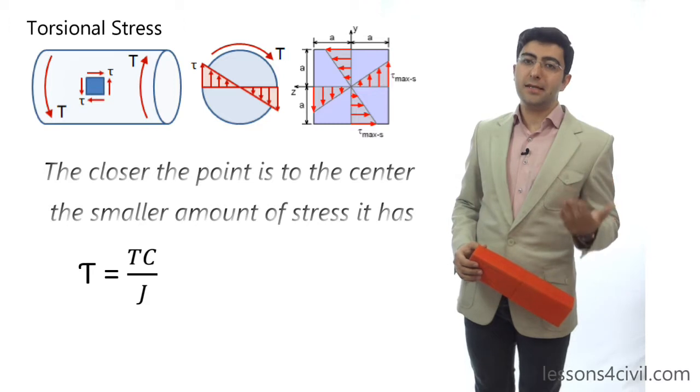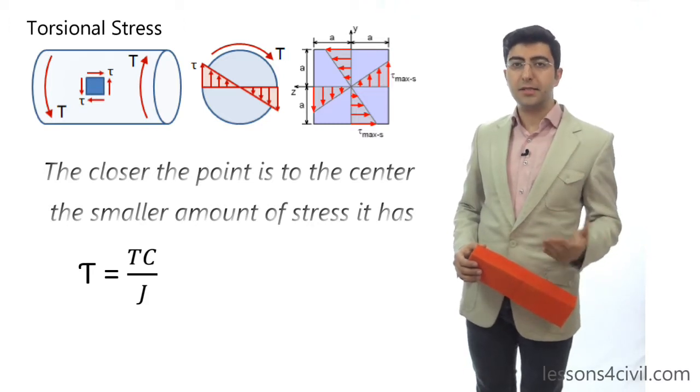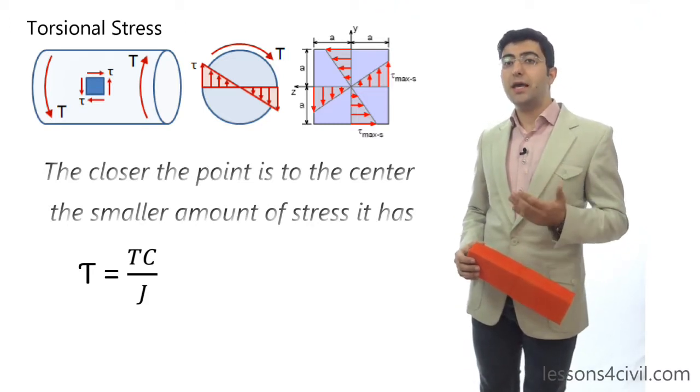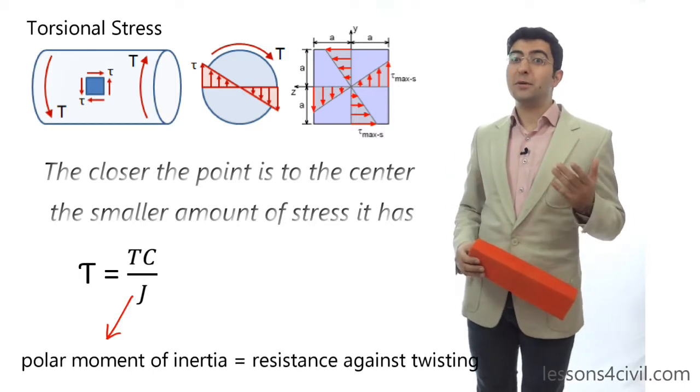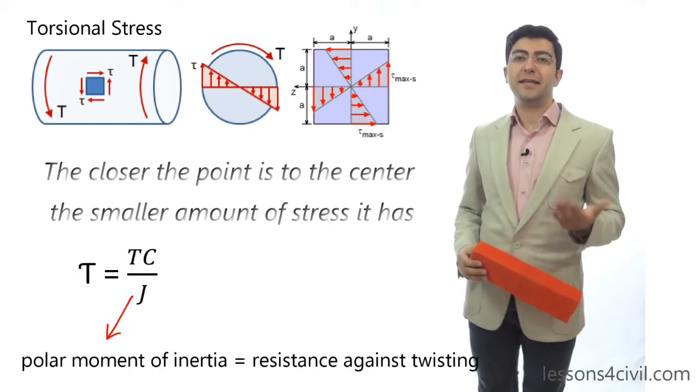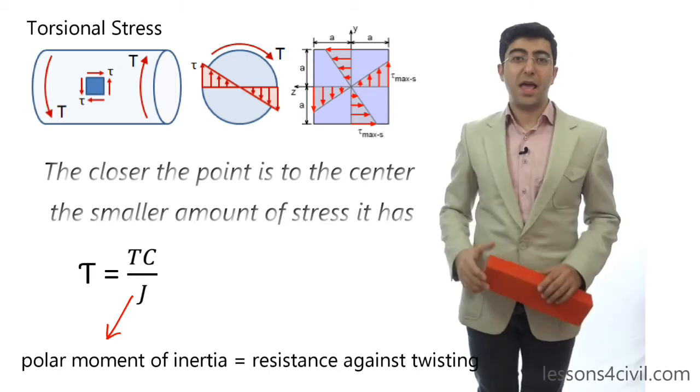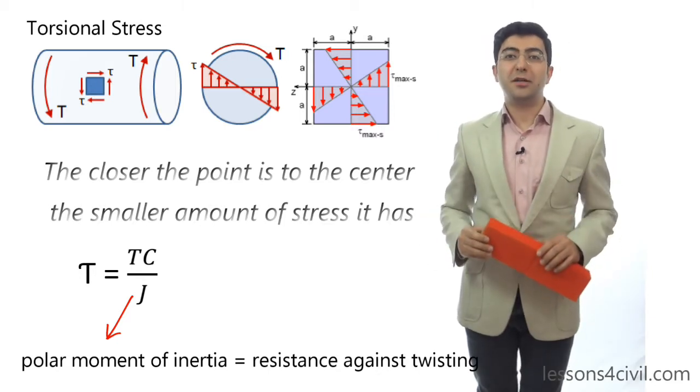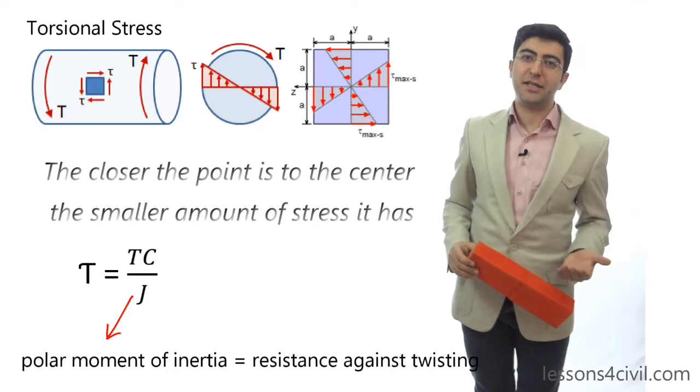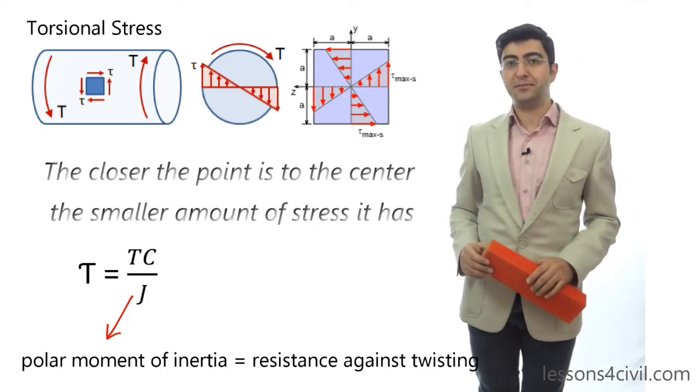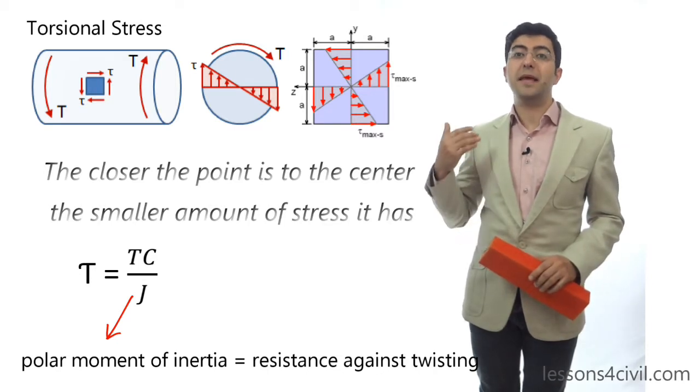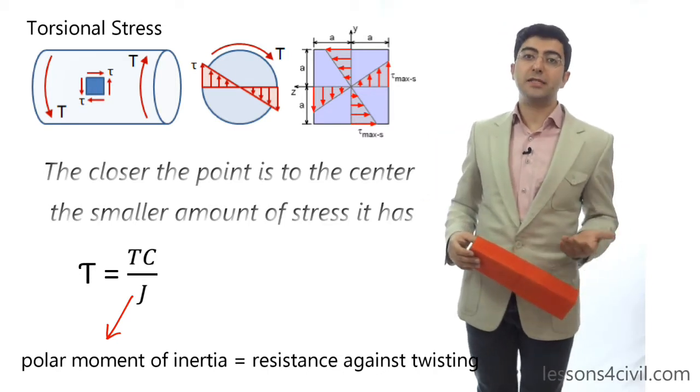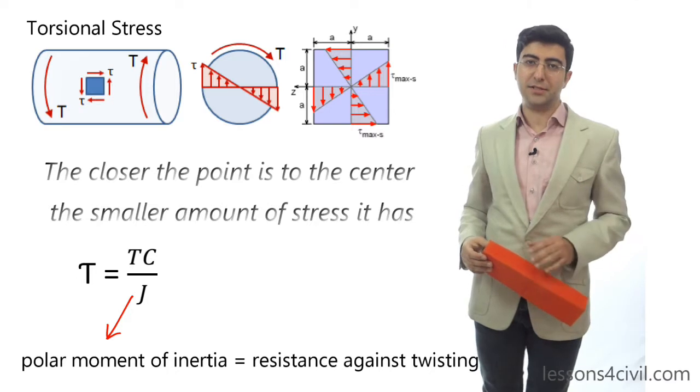C is the distance between the point and the center. And finally, J is the polar moment of inertia. Polar moment of inertia is actually an indicator of resistance against twisting. And please don't mix it up with the area moment of inertia that you learned in the previous lesson. Area moment of inertia is about resistance against bending moment. But J is something about torsional resistance.